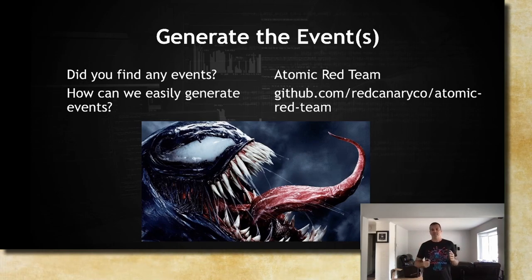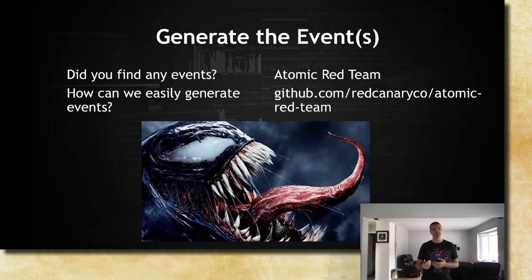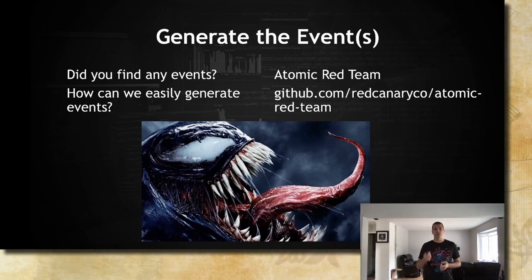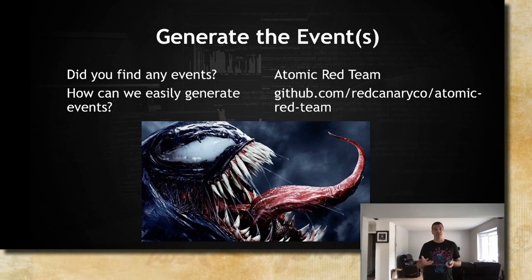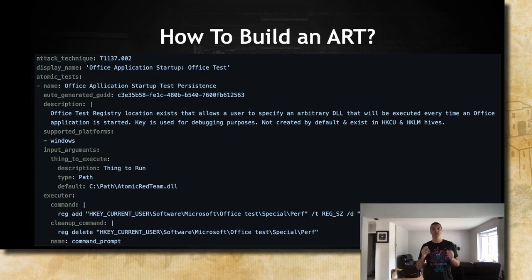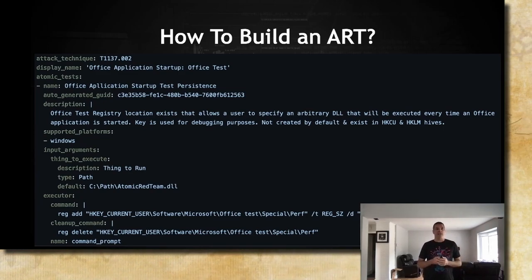When you do your hunting, you will not always find the events you're looking for — and in fact we hope we don't find them, because that would mean we're probably compromised. So how can you generate these events at will? There's a framework called Atomic Red Team. It's not practical to run these things manually over and over again to test everything, so we're going to use that framework. If you like what you see, there's a workshop tomorrow and I think there are still seats.